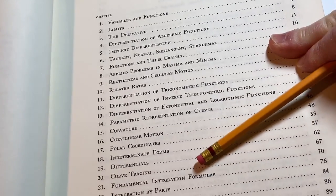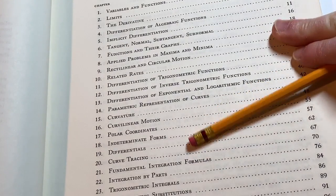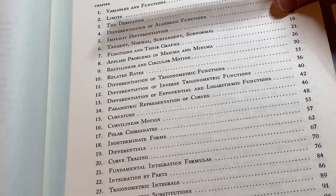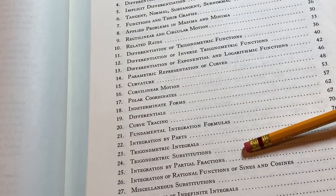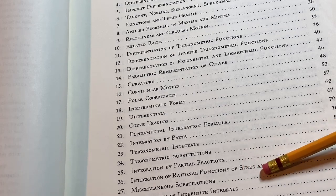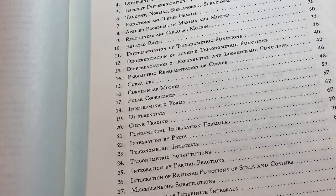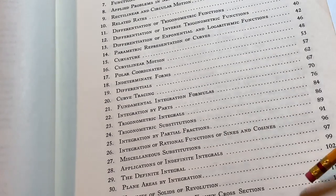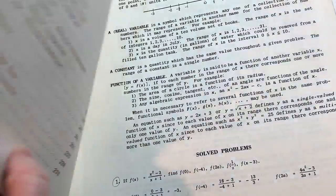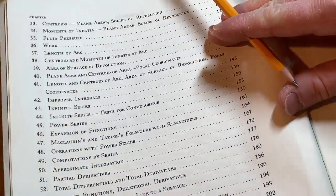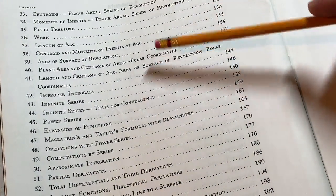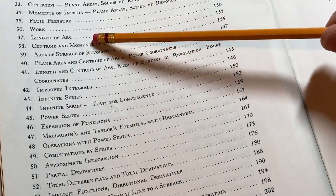Curvilinear motion, polar coordinates, indeterminate forms, differentials, curve tracing, fundamental integration formulas, integration by parts, trig integrals, trig substitution, partial fractions. Cool. And then some miscellaneous substitutions, volumes of solids with known cross-sections. And then there's more. There's actually more contents. That's not it. It keeps going. It's ridiculous how much math is contained in this book.